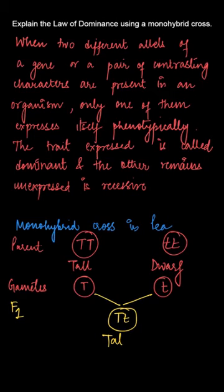So, gametes produced by the parents with TT will have the allele T and the gamete produced by the parent with tt genotype will be t.